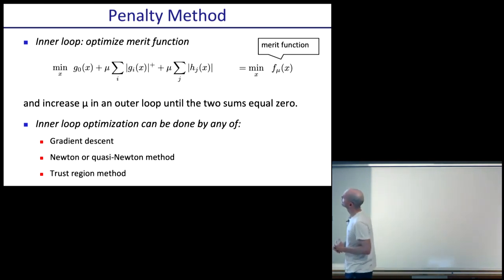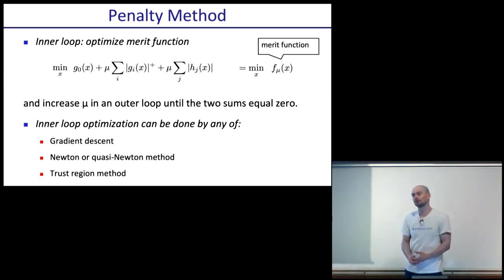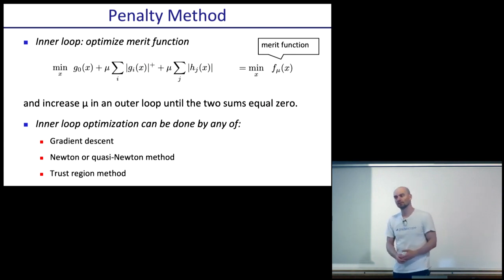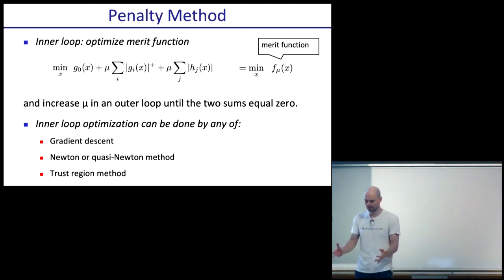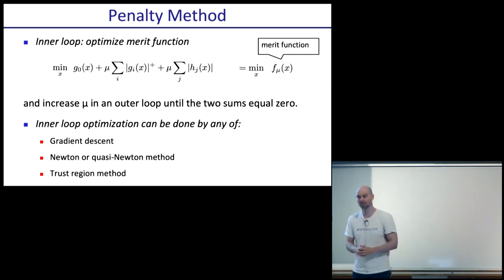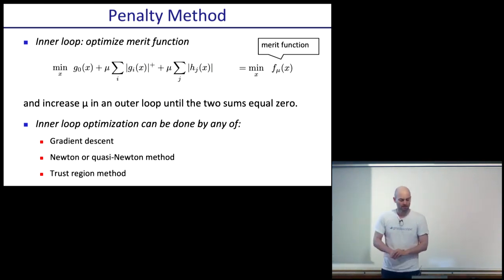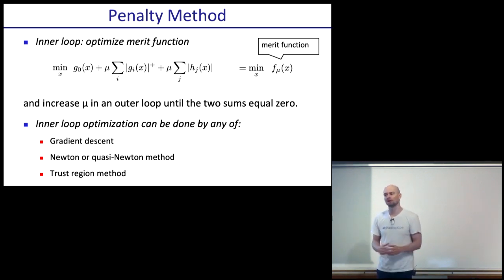If you were faced with some optimization problem, which order would you try these methods? Typically, if your problem is relatively low-dimensional, you'd try a trust region method. You'll have solvers that solve the inner trust region approximation super quickly and precisely, then iterate over mu and ultimately find a good solution. However, these dedicated solvers often don't scale well once you have really large problems — maybe a million variables.